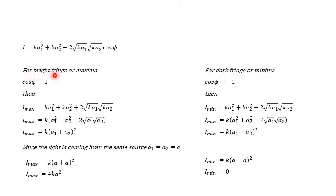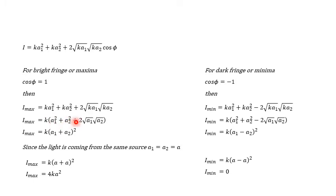For the bright fringe or maxima, the cos φ term is 1. If cos φ equals 1, then Imax can be written as K·A1² + K·A2² + 2K·A1·A2. On simplification, taking K common, we have K(A1² + A2² + 2√A1·√A2), which we can write as K(A1 + A2)².